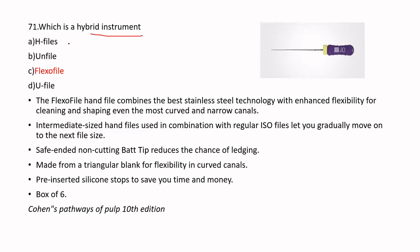The hybrid instrument among the options is the Flexofile. H-files are direct instruments and not hybrid. The Uni-file is used for calcified canals and instrument removal, also not hybrid. The Flexofile combines stainless steel technology with enhanced flexibility, helpful for cleaning and shaping in curved and narrow canals, and has a safe-ended tip that reduces the chance of ledging.